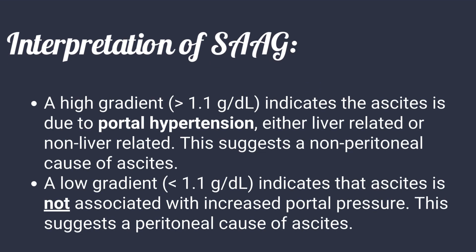How to interpret SAG: a high gradient of more than 1.1 gram per deciliter indicates that ascites is due to portal hypertension, either liver-related or non-liver-related, suggesting a non-peritoneal cause. A low gradient of less than 1.1 gram per deciliter indicates ascites is not associated with increased portal pressure, suggesting a peritoneal cause.